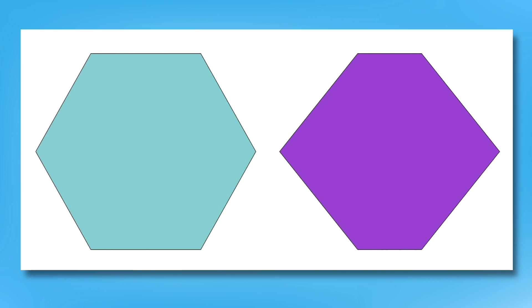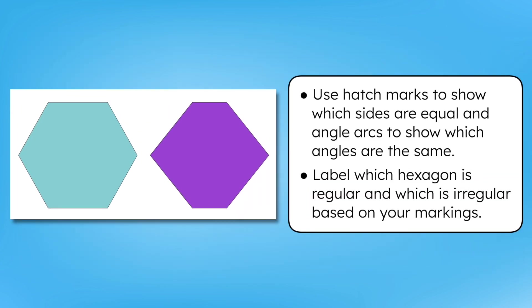Alright, time to practice. You'll find two hexagons in your notes. Use hatchmarks to show which sides are equal, and angle arcs to show which angles are the same. Then label which hexagon is regular and which is irregular based on your markings. Pause the video here to record your thinking in your guided notes.